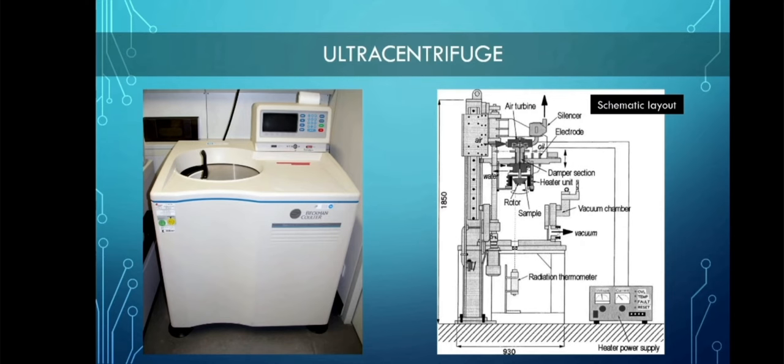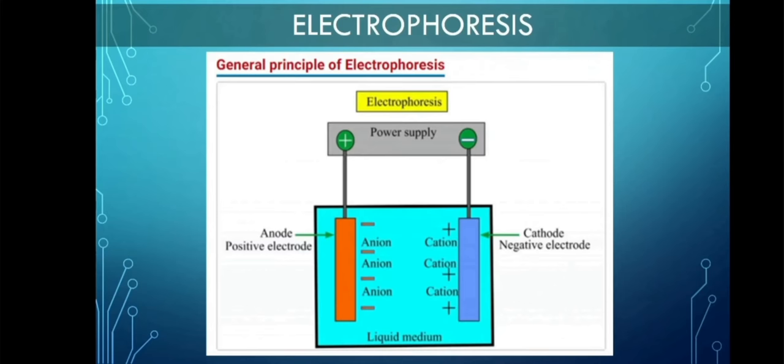Next, electrophoresis. Electrophoresis is a laboratory technique used to separate DNA, RNA, or protein molecules based on their size and electrical charge. An electric current is used to move the molecules through a gel. Pores in the gel work like a sieve, allowing smaller molecules to move faster than larger molecules. The conditions can be adjusted to separate molecules in a desired size range.